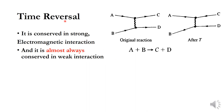First, the time reversal operation. If this is the reaction where A and B react to get C and D, as this Feynman diagram represents, after the time reversal operation, this reaction will be C and D combining to get A and B. Here, the position of the particles remains unchanged, but the arrow is reversed, meaning the process occurs in a totally reversed manner. If this reaction after time reversal is possible, then this reaction is invariant under time reversal operation.